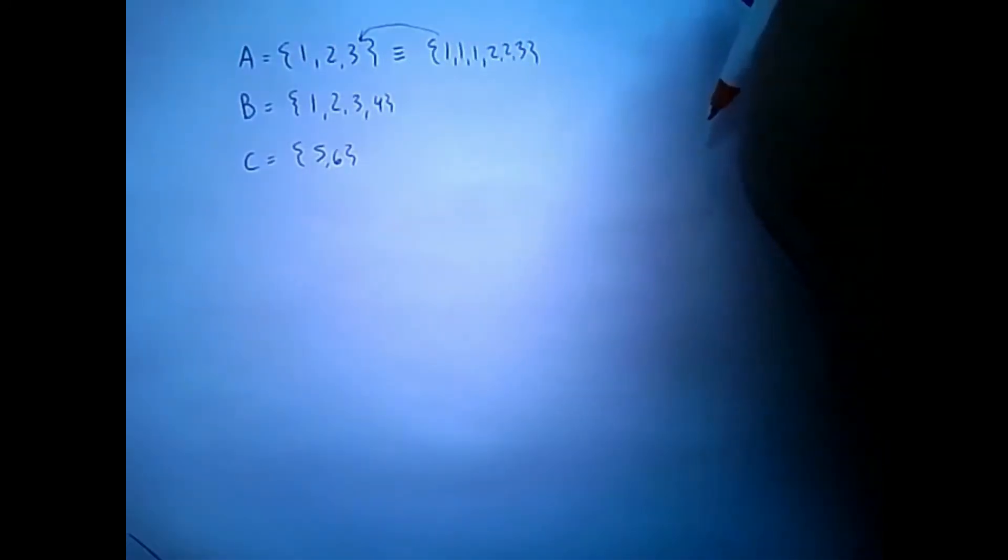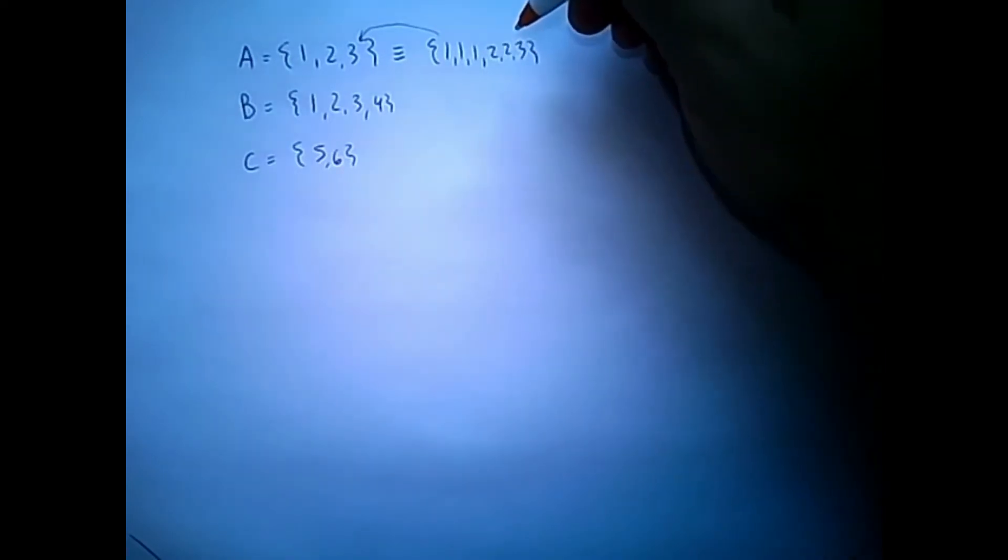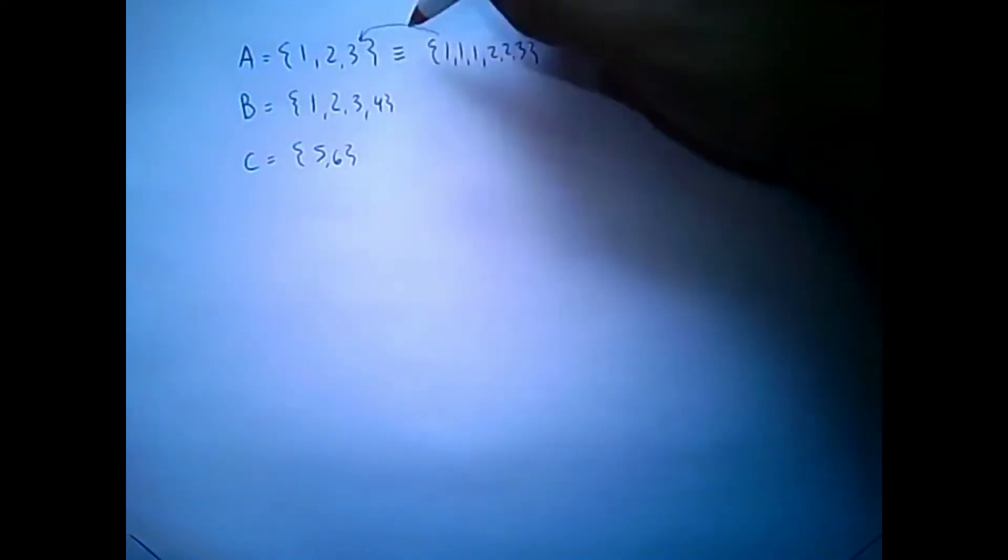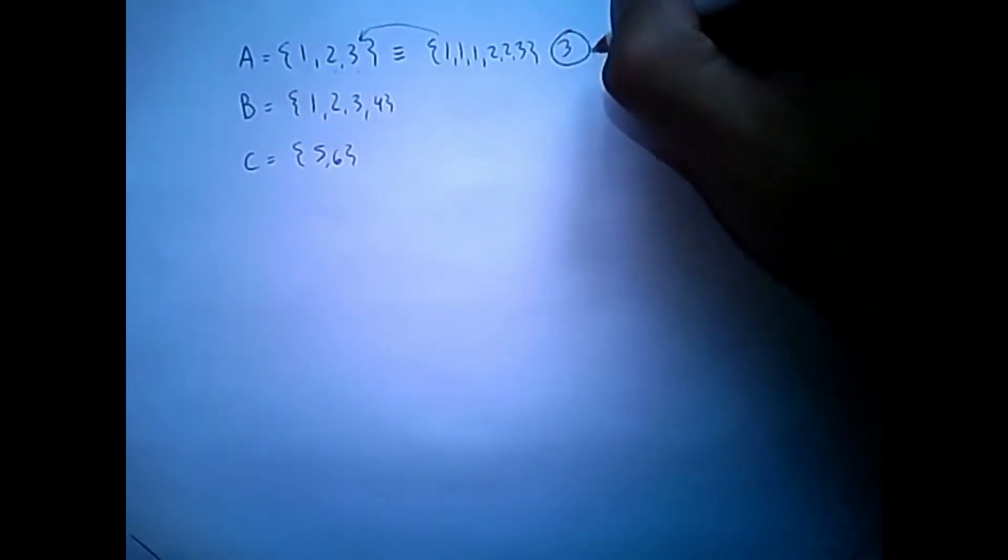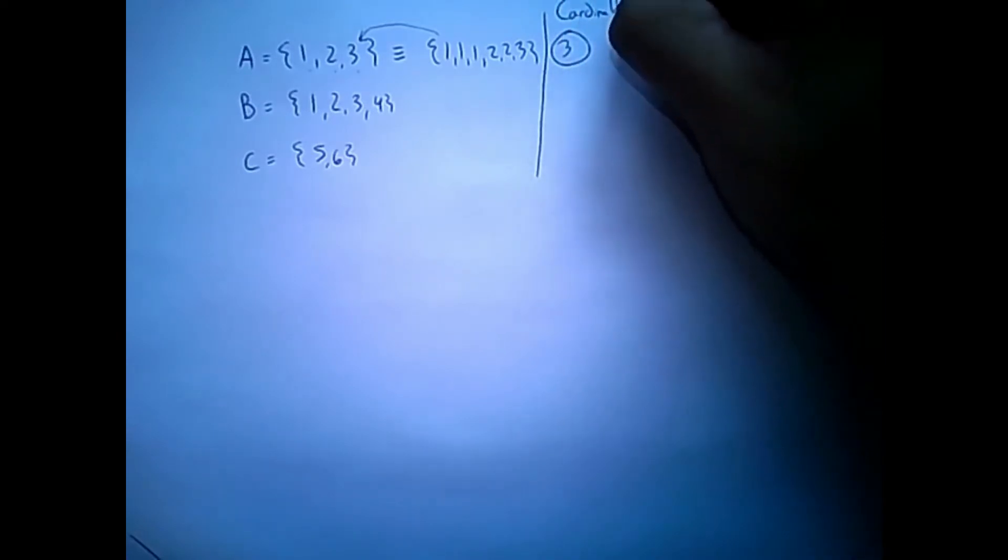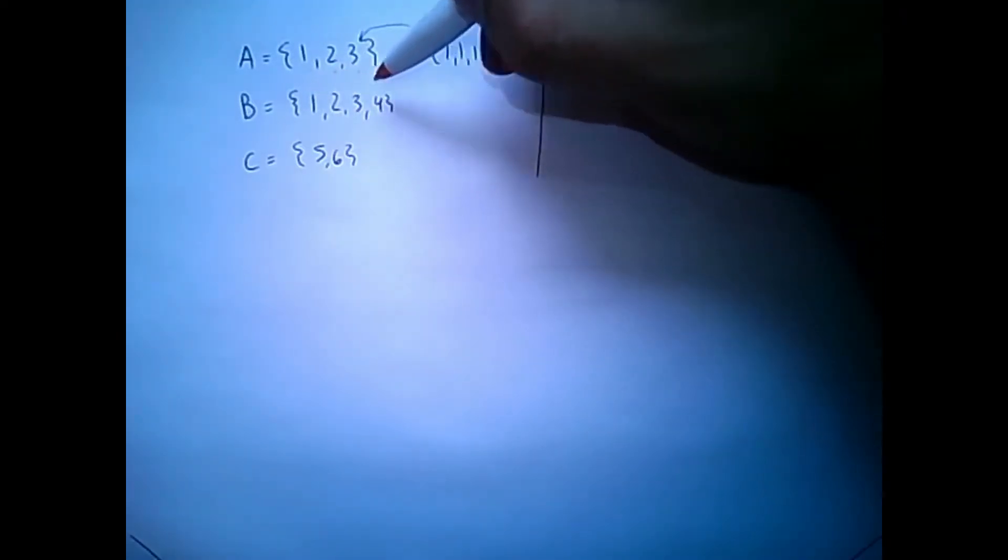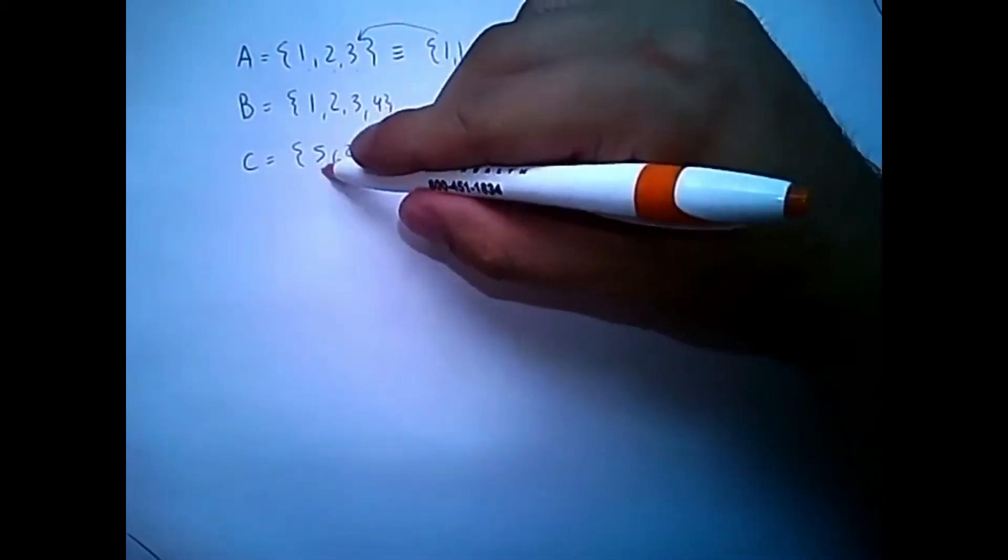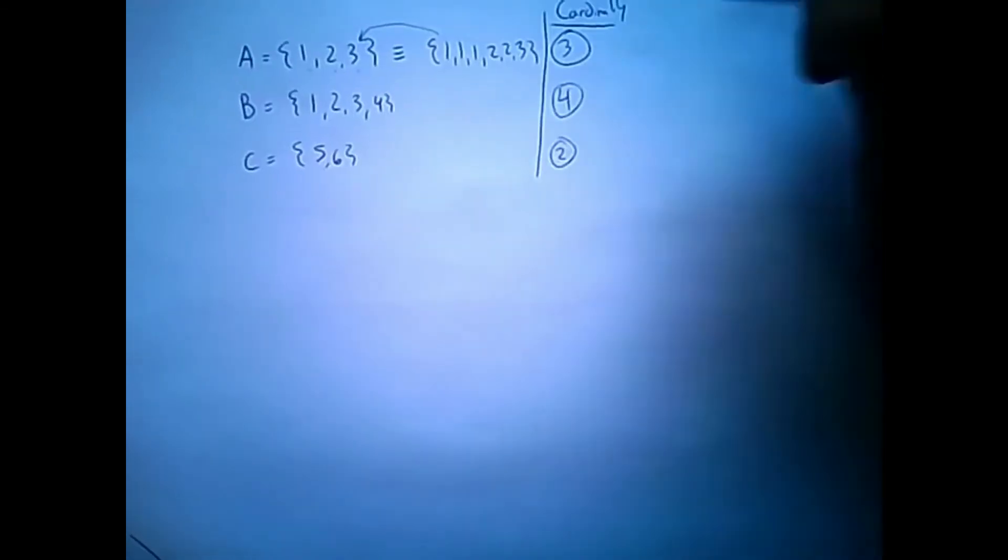And the number of elements that exist in the set is known as the cardinality. So in set A, I have 3 elements, 1, 2, 3. So the cardinality is 3 here. For set B, I have 1, 2, 3, 4. So the cardinality is 4. And set C, I have 2 items. So the cardinality is 2.